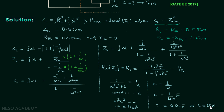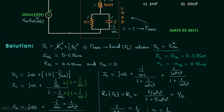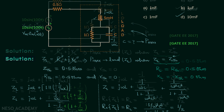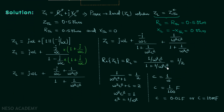Option D is the correct answer: C equals 10 mF. To find this answer, we equated the real part of ZL to 1/2 rather than setting the imaginary part to 0, because the calculation is simpler that way. That concludes this lecture.